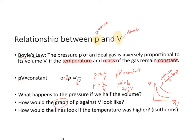To make this curve into a straight line, I would plot p against 1/v. That gives a straight line through the origin, since there is no y-intercept in this equation. The gradient would be equal to the constant number.